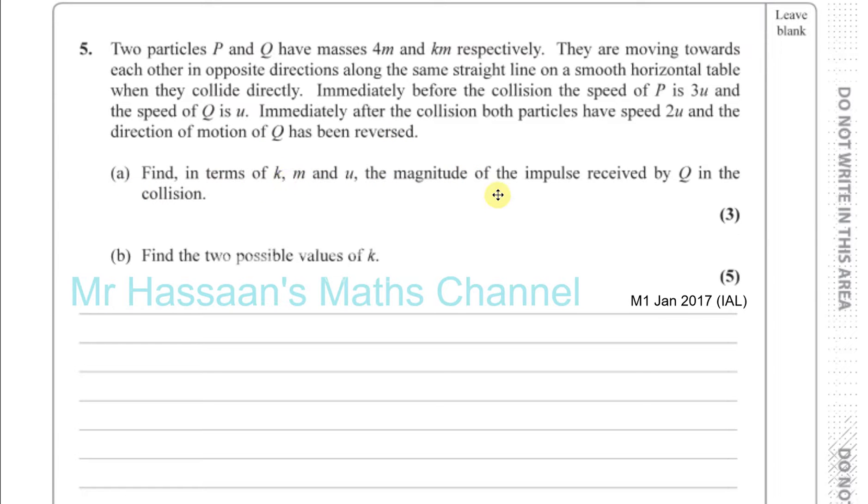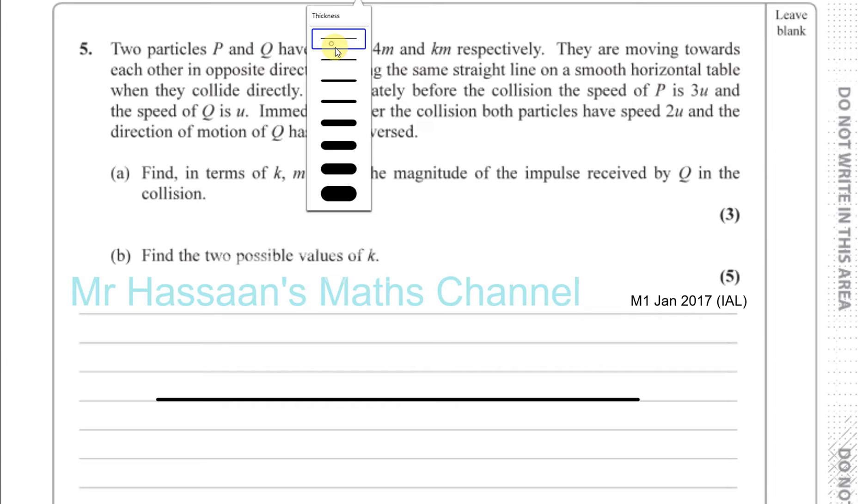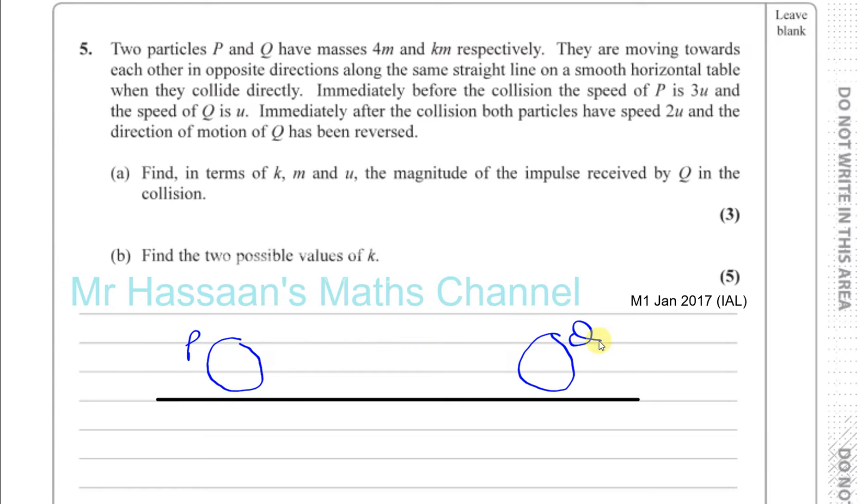Find in terms of KM and U the magnitude of the impulse received by Q in the collision. So let's make a little sketch. We have here P and Q. P has a mass of 4M and Q has a mass of KM. P is moving towards Q and Q is moving towards P. P has got a speed of 3U and Q has got a speed of U. This is before the collision.